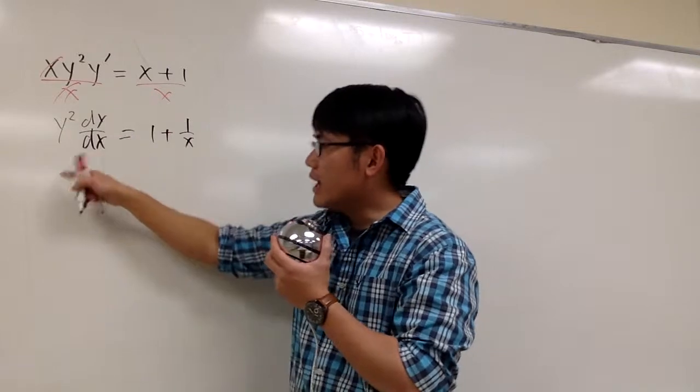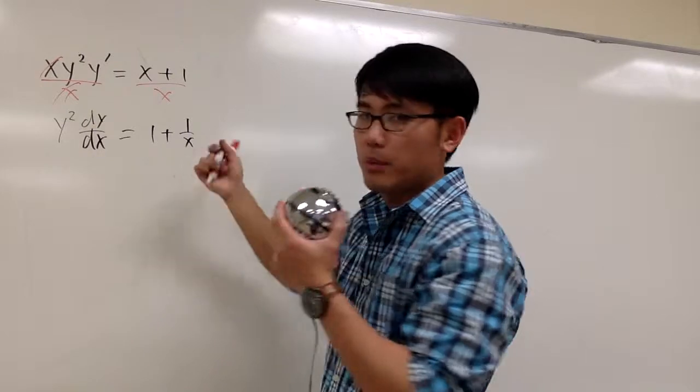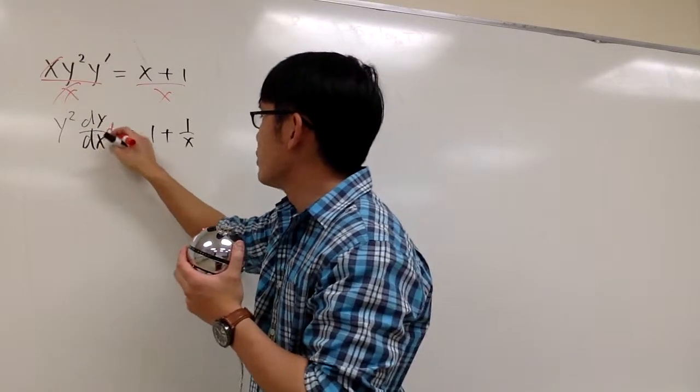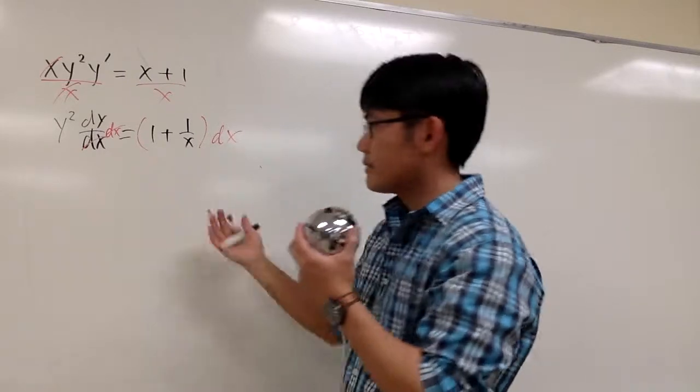Well, on the left-hand side, I have a lot of y's, I don't want to have the dx. So I can put the dx onto the right-hand side by multiplying it. So the idea is, we multiply both sides by dx, so we cancel. That's what's happening.